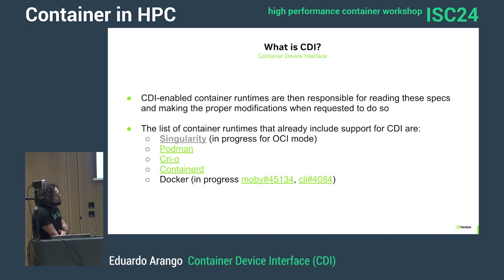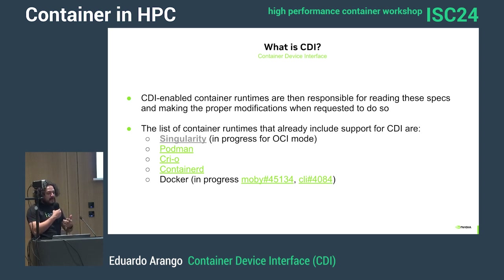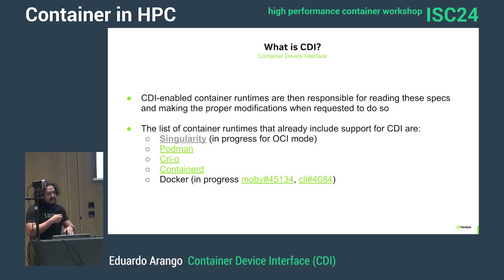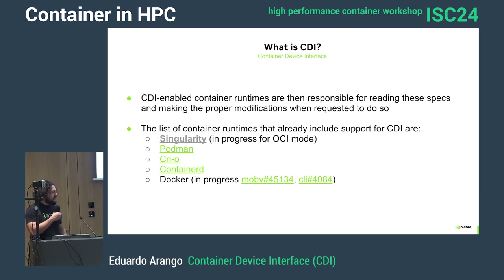CDI is not necessarily Kubernetes-related — it's at the container runtime level: Singularity, Podman, and others. At the node level, when you configure Docker in CDI mode, you do two or three steps to tell Docker you're in CDI mode. Then you can run Docker and specify devices — you can say 'all,' or if you have multiple devices or a MIG device, you can specify one, two, or three specific instances.